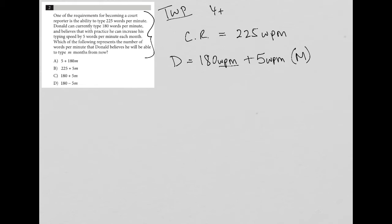Because I have all these letters here, I'll write it as D equals 180 plus 5M, knowing that the numbers represent words per minute, but M represents months, the number of months.